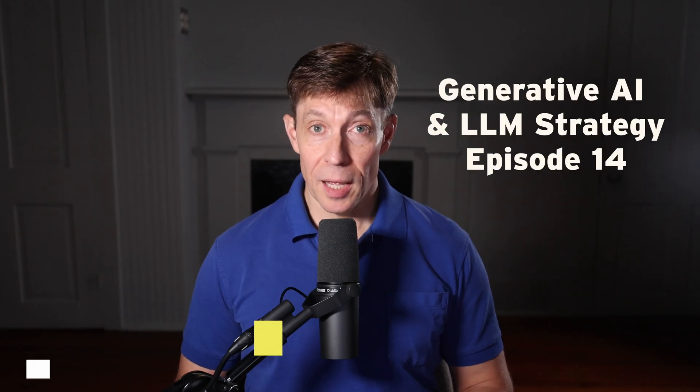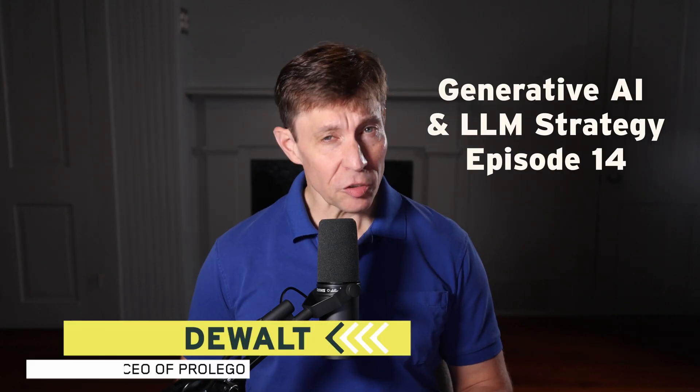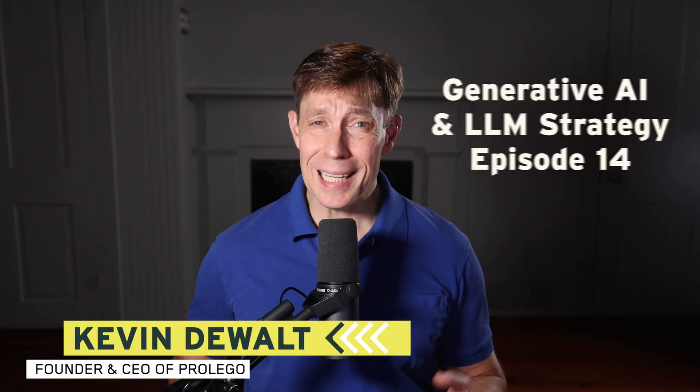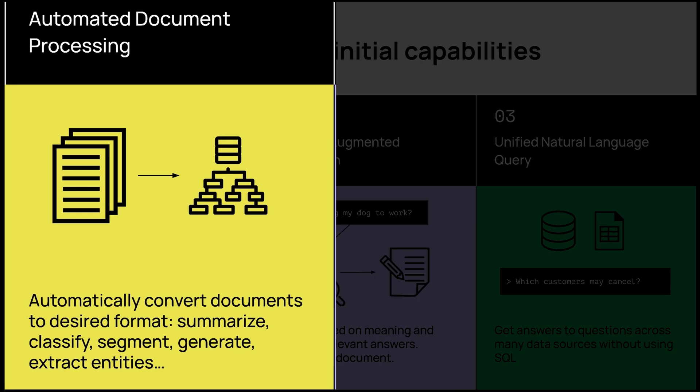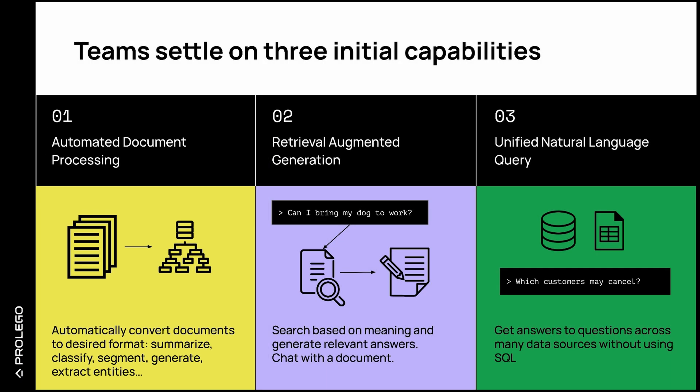Because generative AI and LLMs are such incredible technologies, it is easy to become overwhelmed with your options. Fortunately, you can simplify by selecting from the most popular projects. First, automated document processing — a capability to transform text like contracts or emails using NLP techniques such as summarization, classification,